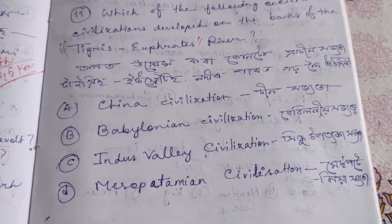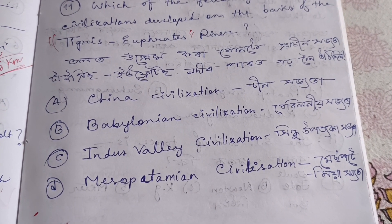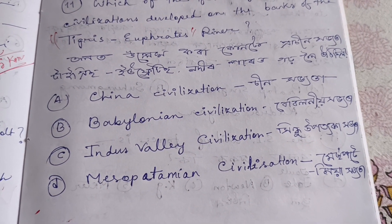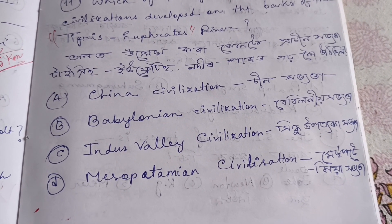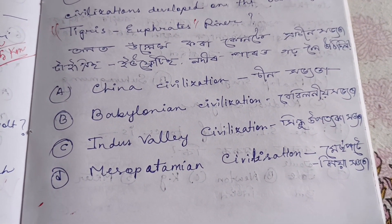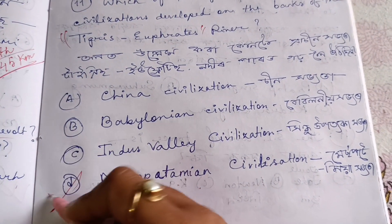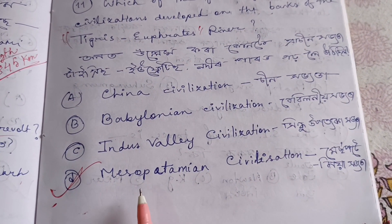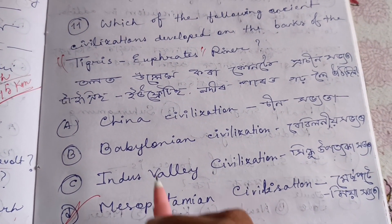The options are: China civilization, Babylonian civilization, Indus Valley civilization, and Mesopotamian civilization. The correct answer is option D — Mesopotamian civilization, as it developed on the banks of the Tigris and Euphrates rivers.